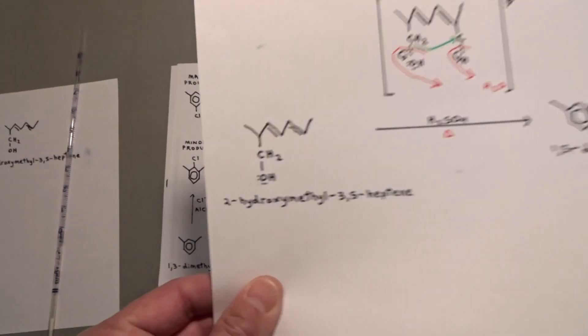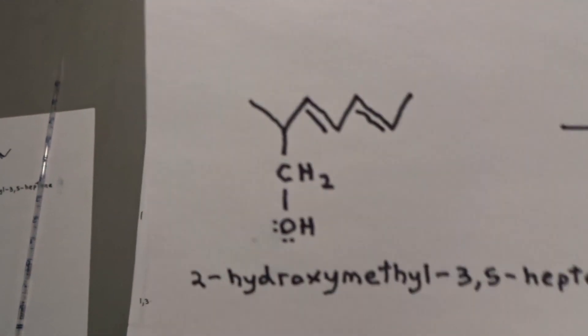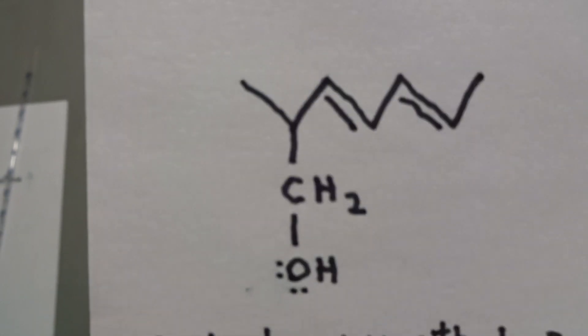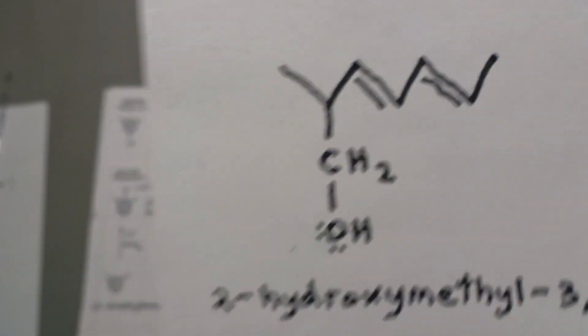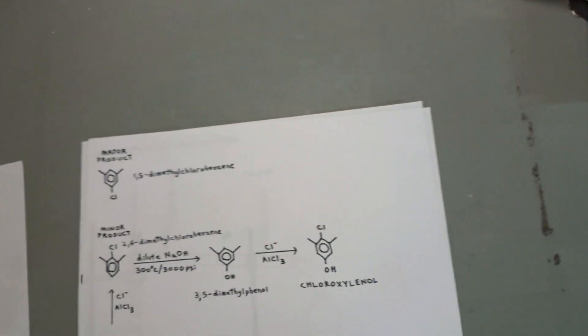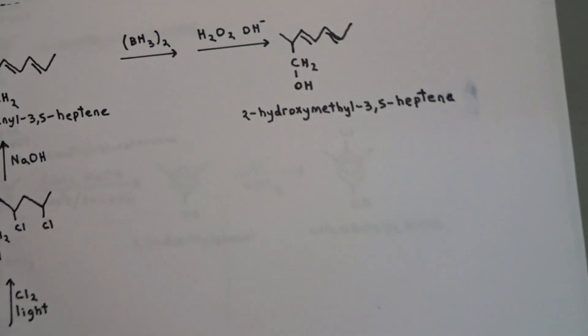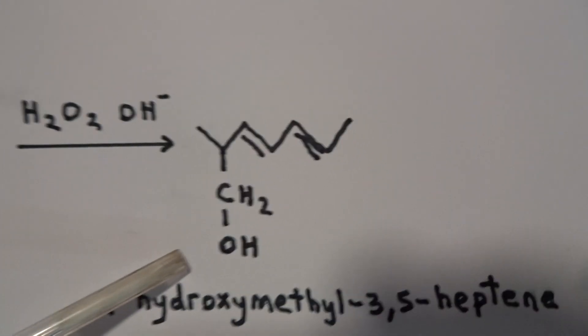We'll practice ring closure. And notice, in the synthesis, always do your organic chemistry synthesis backwards. You start with the product, and you work backwards. Working backwards, we will need to make this molecule.